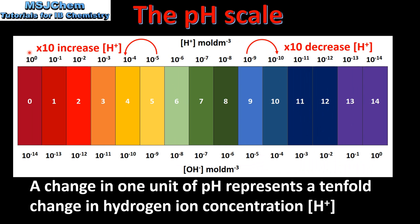Next we look at how a change in one unit of pH changes the concentration of hydrogen ions. A change in one unit of pH represents a tenfold change in hydrogen ion concentration. For example, if the pH decreases from 5 to 4, that represents a 10 times increase in the hydrogen ion concentration.